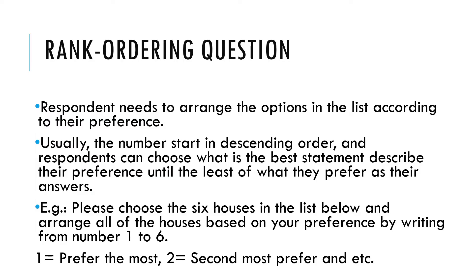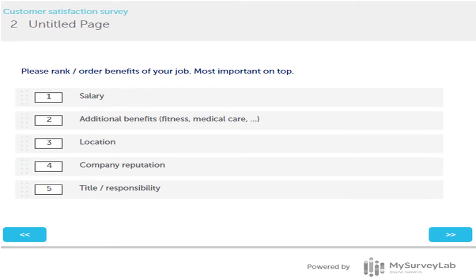The next type is rank ordering questions. Respondents need to arrange the options in a list according to their preference. Usually the number starts in descending order, and respondents choose what best describes their preference from most to least preferred. For example: 'Please choose the six houses in the list below and arrange all of the houses based on your preference by writing from number 1 to 6. 1 means what you prefer the most, 2 is second most preferred, and 6 is what you least prefer.' Another example: 'Please rank order benefits of your job, most important on top.'